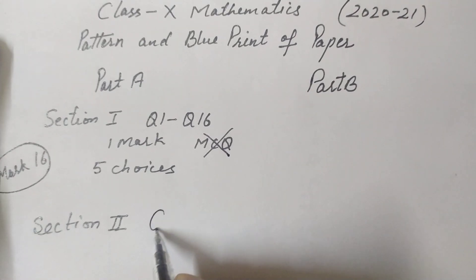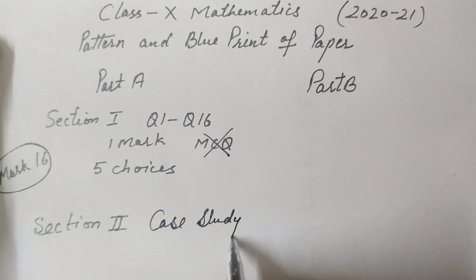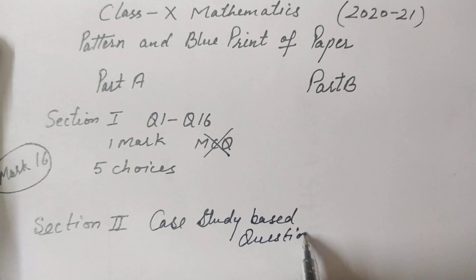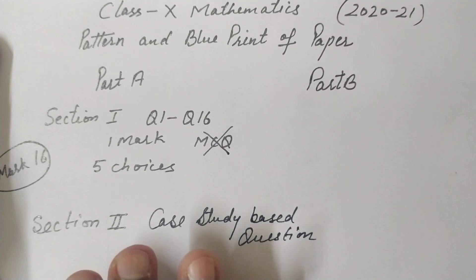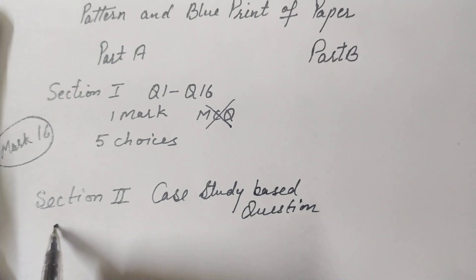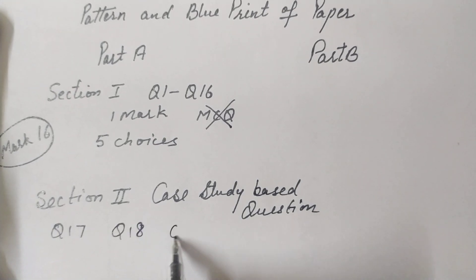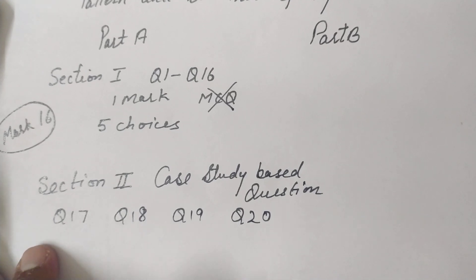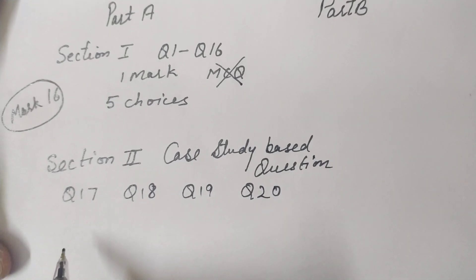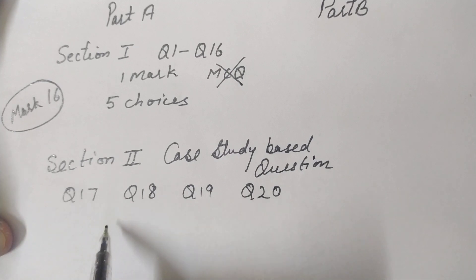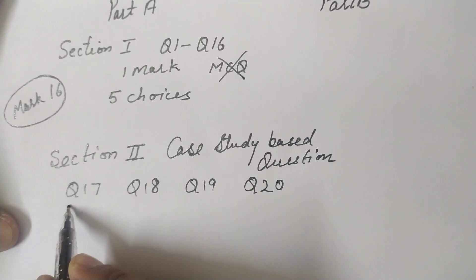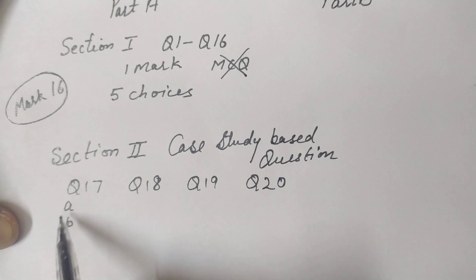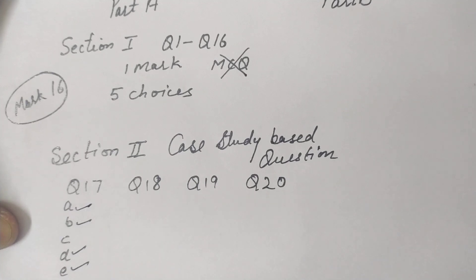In Section 2, there will be four case study based questions — questions 17, 18, 19, and 20. This is a new concept introduced this time. In each case study question, one paragraph is given and then five sub-questions (parts a, b, c, d, e) are asked below it, and you are to attempt any four parts.